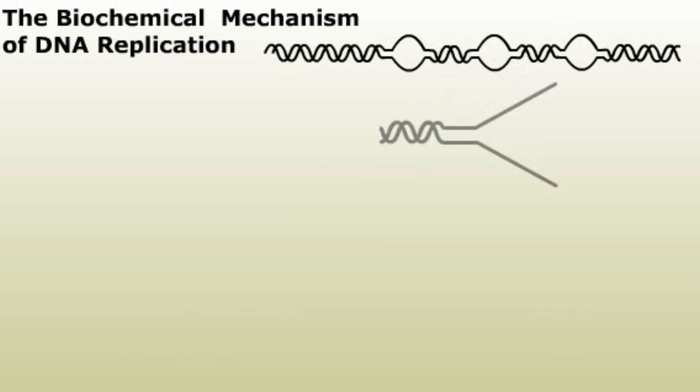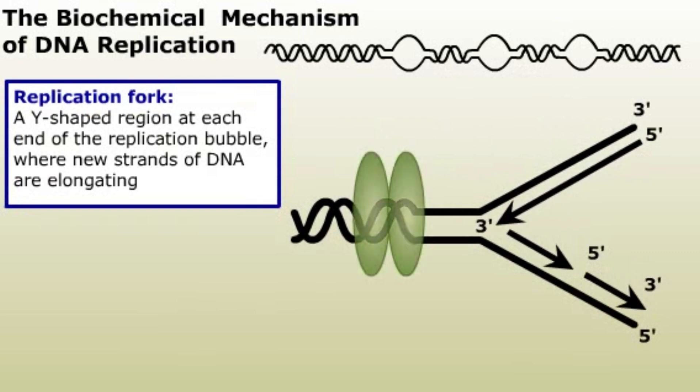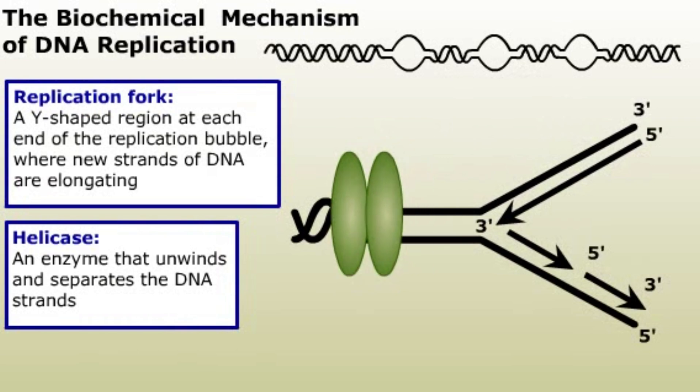Each end of a replication bubble has a replication fork, a Y-shaped region where new strands of DNA are elongating. At the base of the replication fork, the helicase enzyme unwinds the helix and separates the DNA strands.